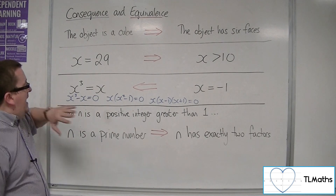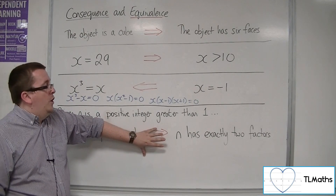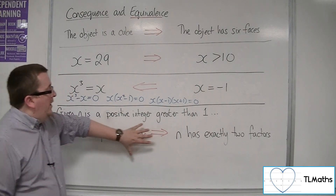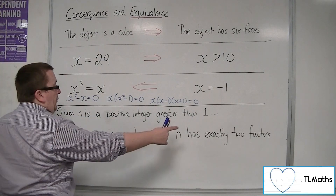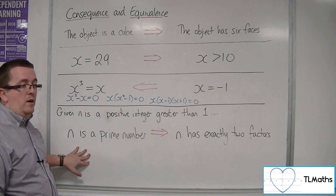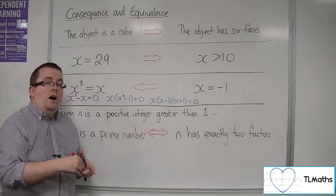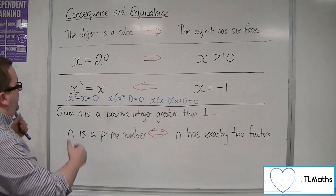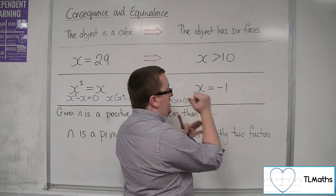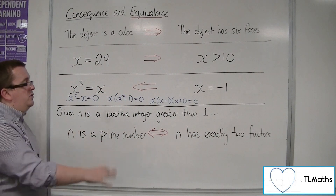Now, given that N is a positive integer greater than 1 and N has exactly two factors, the only numbers that have exactly two factors are those that are prime. So it also works from right to left — because N has exactly two factors, N has to be prime. These two statements are equivalent: if N is a prime number, it has exactly two factors, and if it has exactly two factors, N is a prime number. It works both ways.